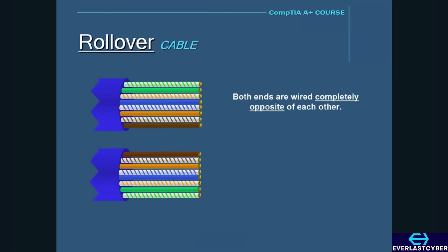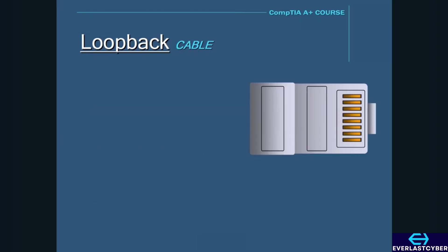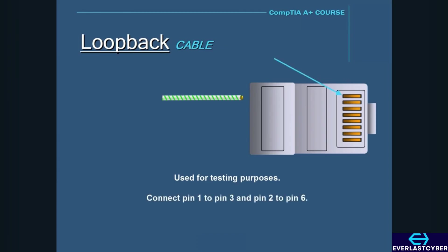A rollover cable is created when both ends are wired opposite of each other. These are used to connect a computer or terminal to a router's console port. A loopback cable is for testing purposes — it is used to make a computer think that it's connected to a network. To make a loopback cable, you connect pin 1 to pin 3 and pin 2 to pin 6.